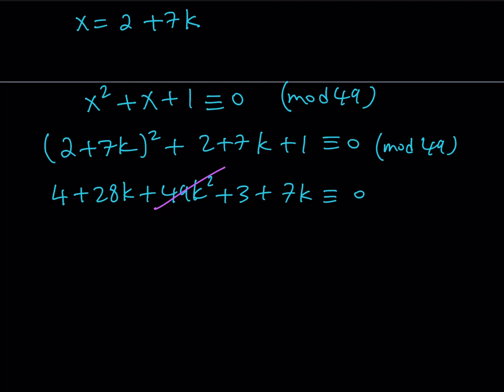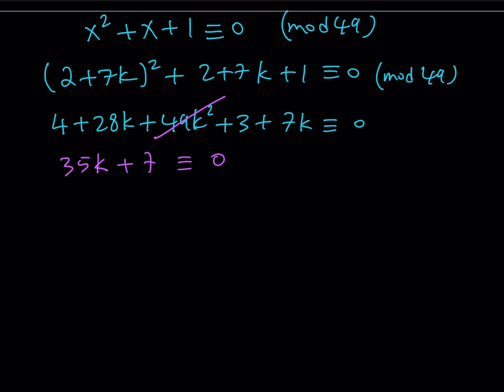We can just go ahead and simplify that. And let's just continue. This gives me 35k. And then 4 plus 3 is 7. So now we get this mod 49. And one of the things I can do is I can just factor out a 7. And this gives me 7 times (5k plus 1).